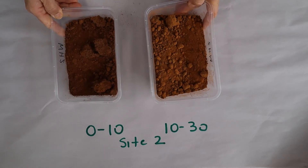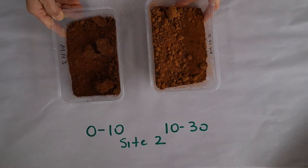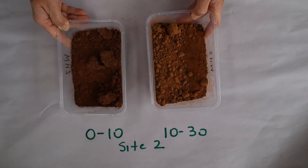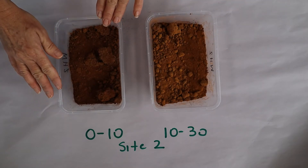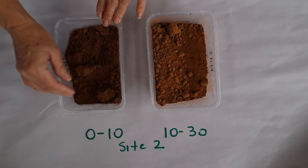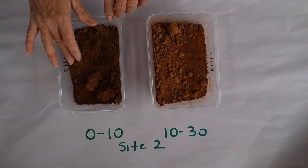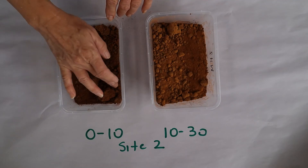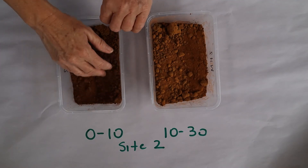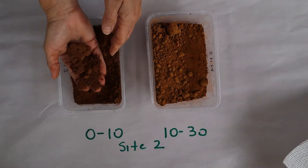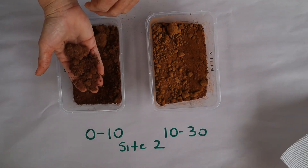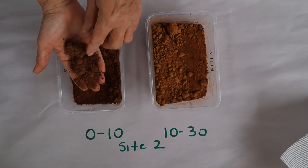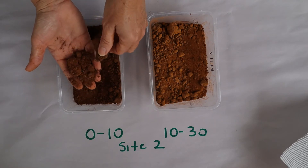These are the soils from Site 2 at Wongan Hills. You can see we're starting to see a difference in color between the soils. This is the 0 to 10 cm sample — have a look at the aggregates, and consider whether there are any segregations or other inclusion bodies visible.